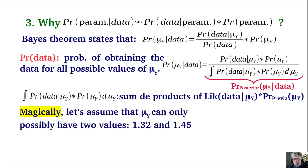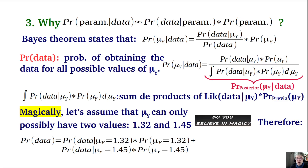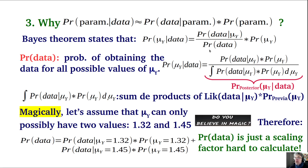For example, if magically the parameter mu could only take two values — 1.32 and 1.35 — we could substitute the integral with just a simple sum. Once calculated, the probability of the data becomes just a number, a scaling factor that is hard to compute in general but very simple here. Realistically, you would need to do it for all possible values of mu.